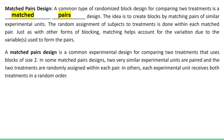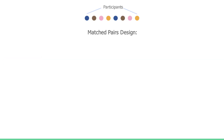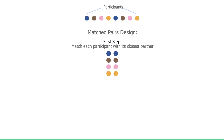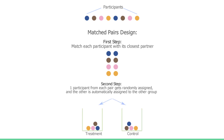Our last example is a matched pairs design. A matched pairs design is a special type of block design where each block is only of size two. If we started with a group of eight participants, we would match each participant with its closest partner — by age, weight, or a relevant health topic. Then the second step is randomly assigning one participant from each pair to either the treatment or the control group. At the end of the experiment, we go back to each pair and see which individual within the pair did better, then combine all results to see if the treatment had any effect.